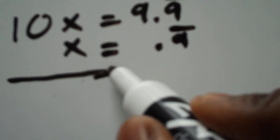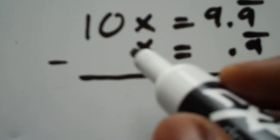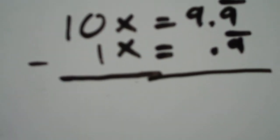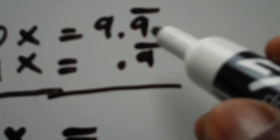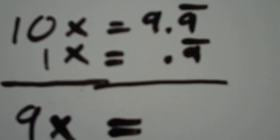Okay, so when we subtract the two, we get ten x minus x, which is nine x. And we're saying that this equals nine point nine repeating minus point nine repeating, which is just nine.